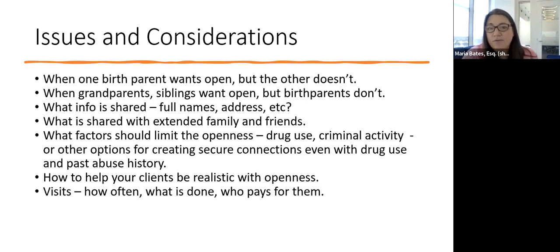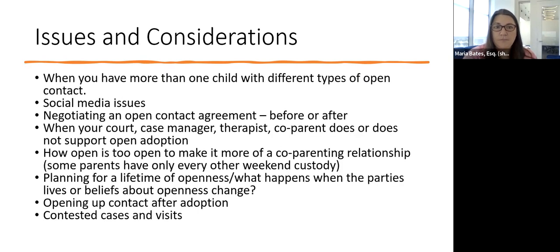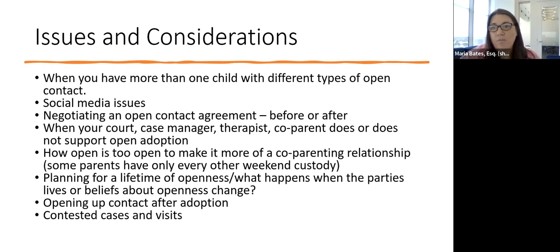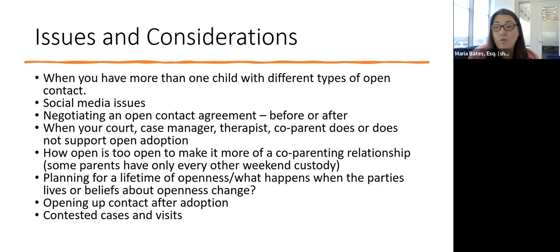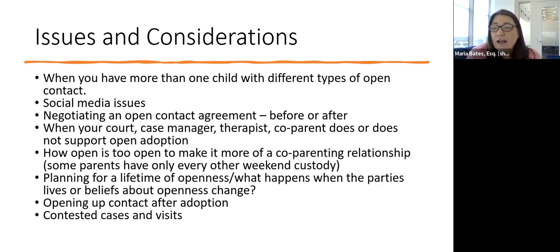When you have more than one child with different types of open contact — for example, one child with very open relationships and another without — we come back to the core: talk about it. Don't just let it sit in the background. Actually communicate. 'How does that feel? What does that look like for you? What's something we can do to support you?' Social media is also a major issue — I know somebody had a question about it in the chat.